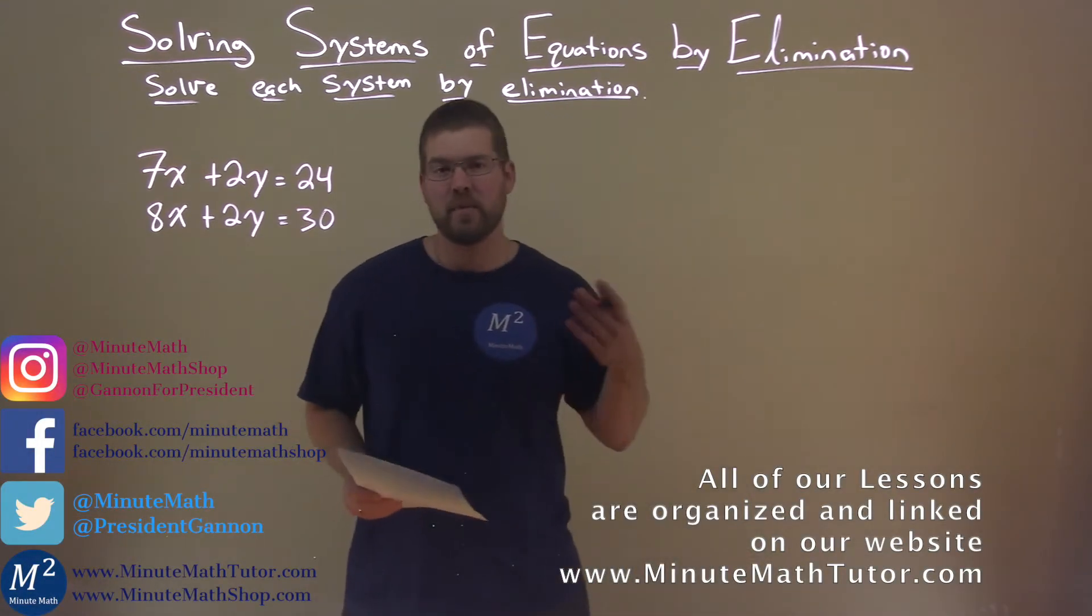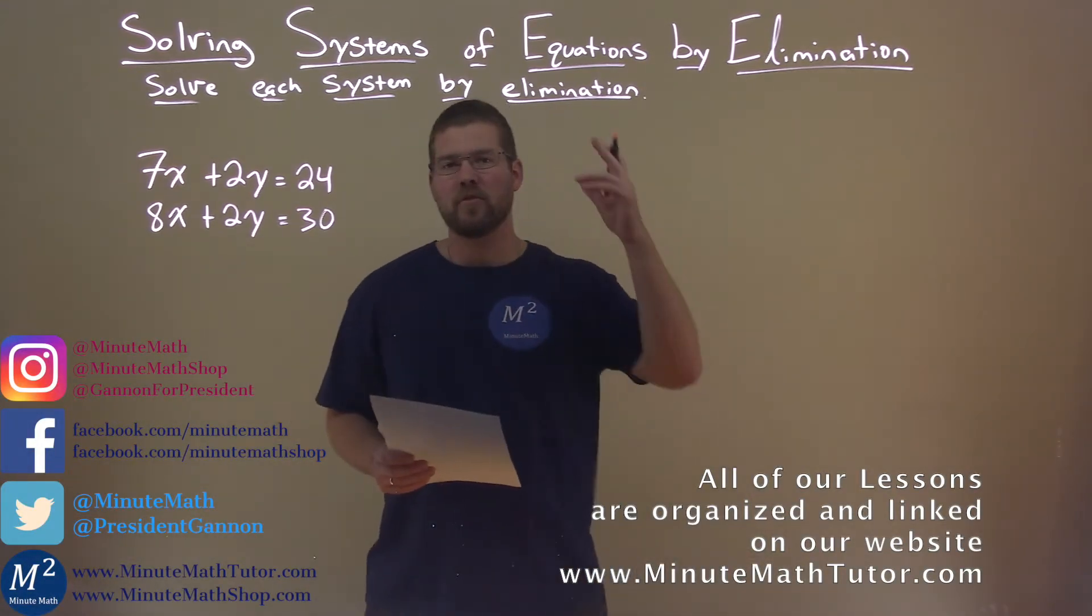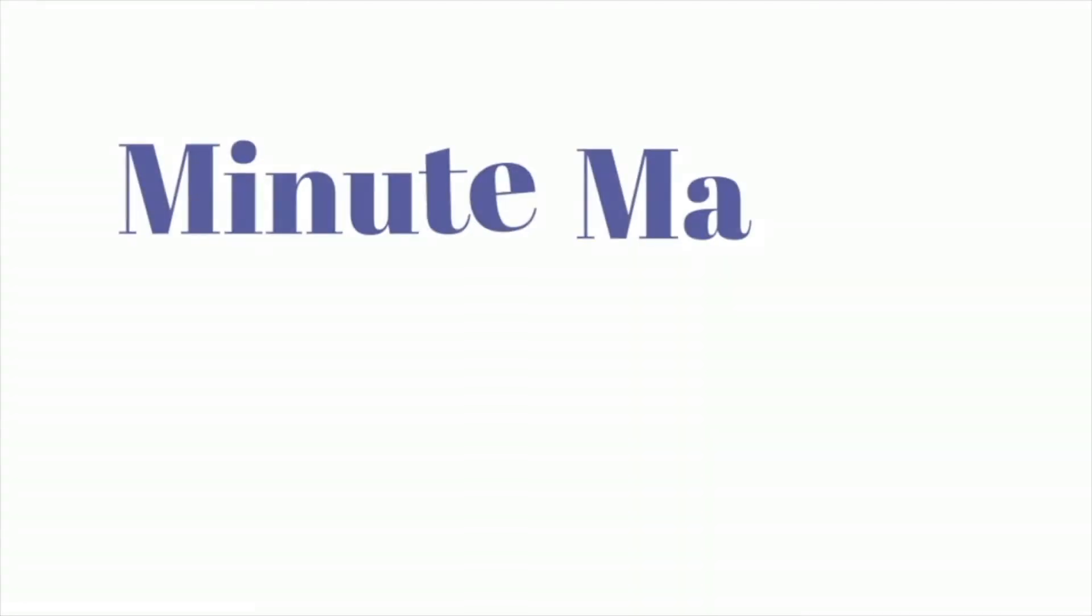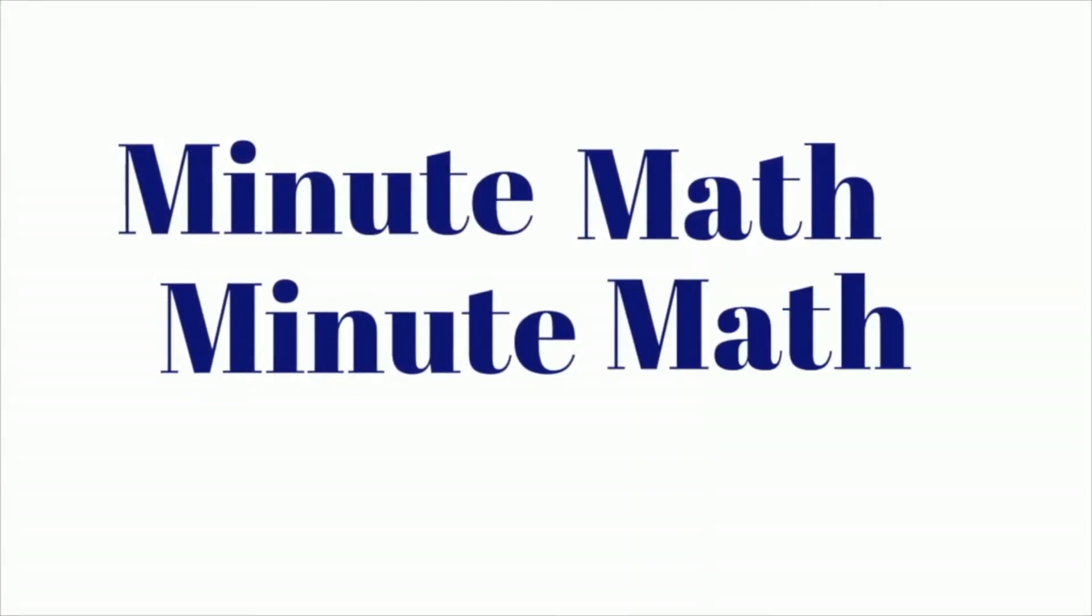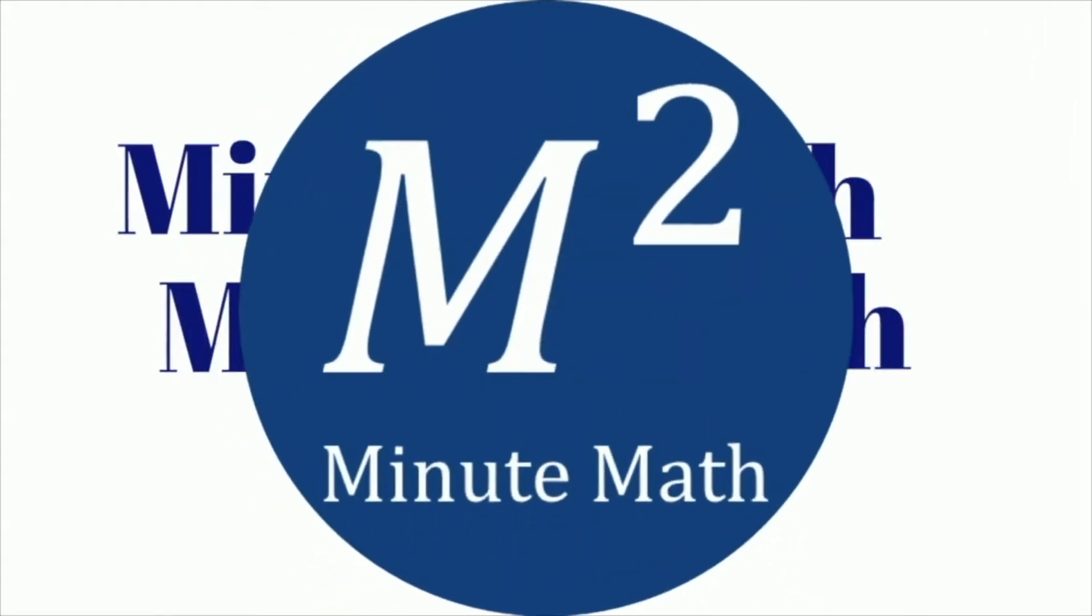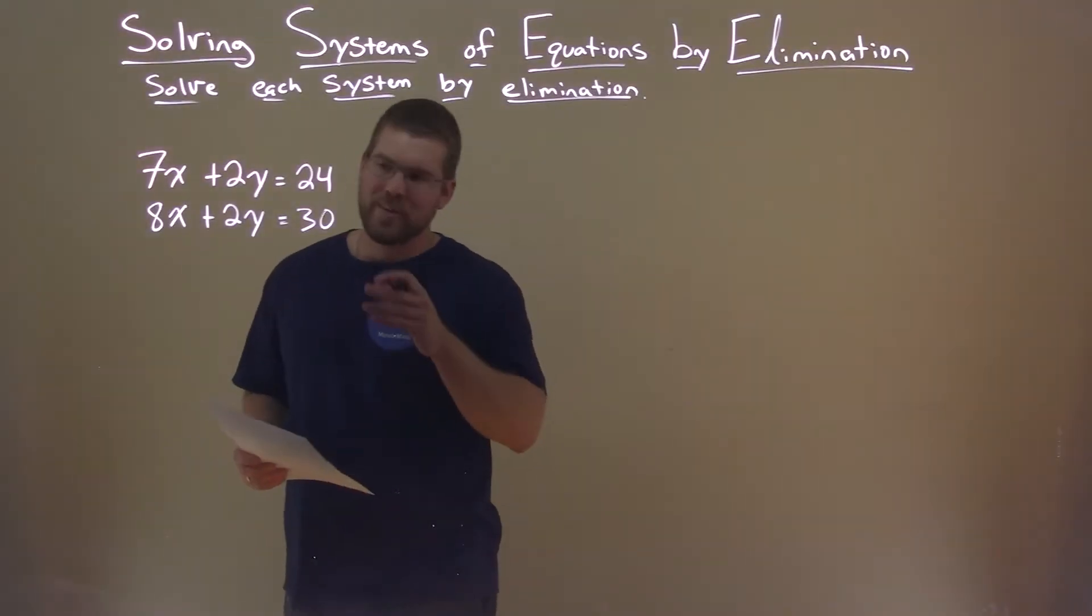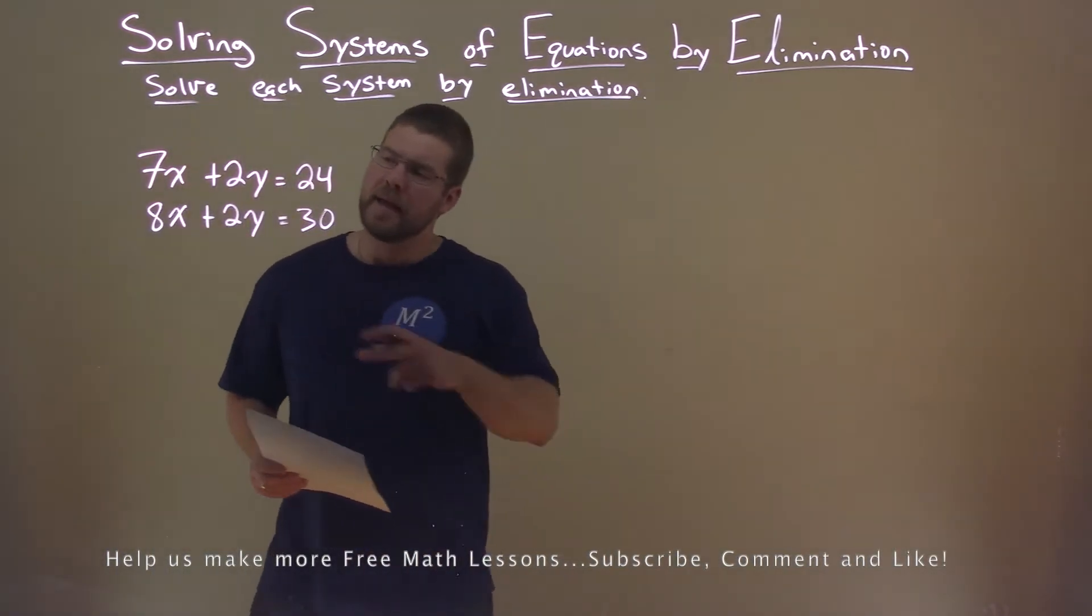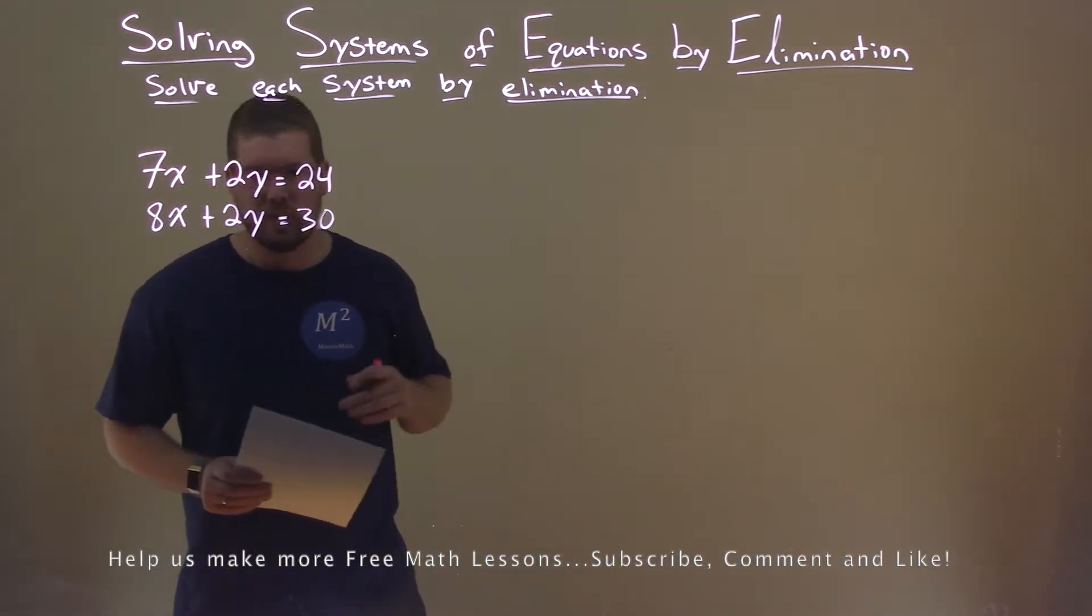Hi, I'm Sean Gannon, and this is MinuteMath. Today we're learning about solving systems of equations by elimination. We're going to solve this problem: 7x + 2y = 24, 8x + 2y = 30.